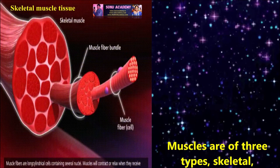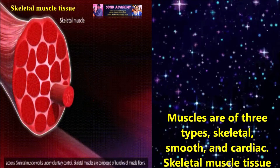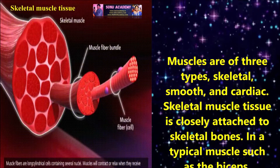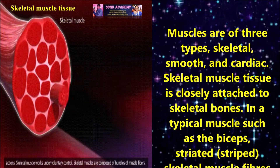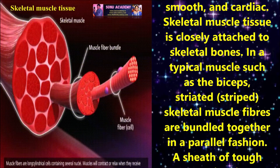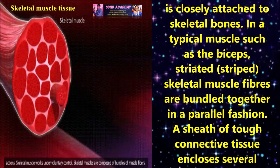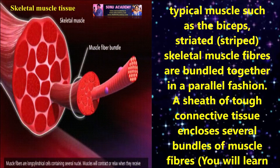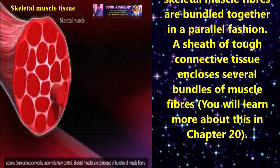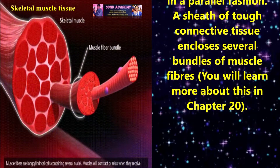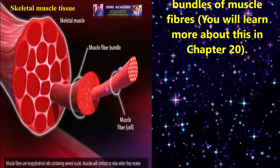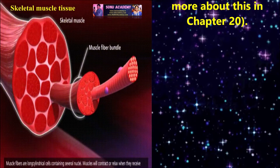Muscles are of three types: skeletal, smooth and cardiac. Skeletal muscle tissue is closely attached to skeletal bones. In a typical muscle such as the biceps, skeletal muscle fibers are bundled together in a parallel fashion. A sheet of tough connective tissue encloses the several bundles of muscle fibers.